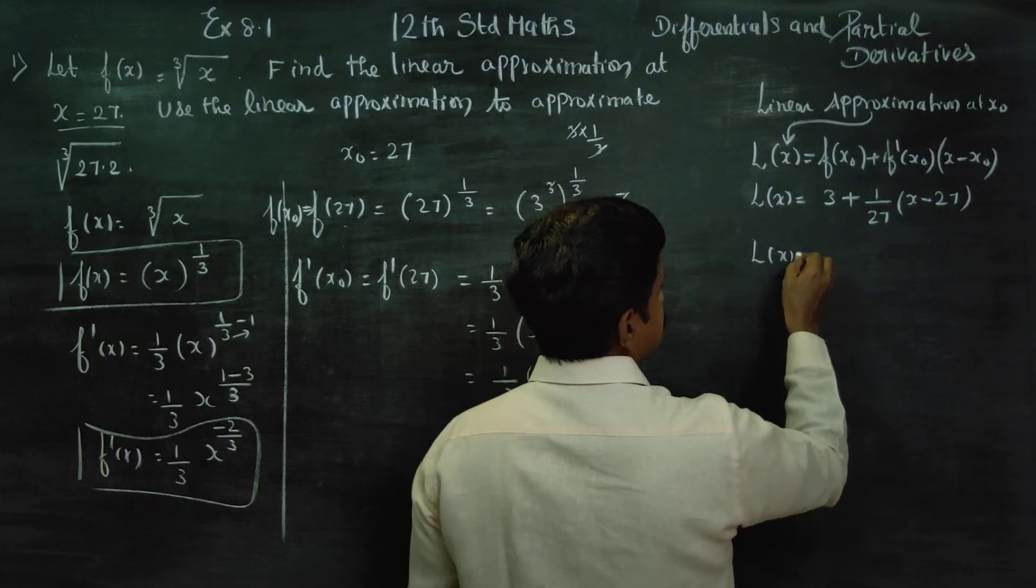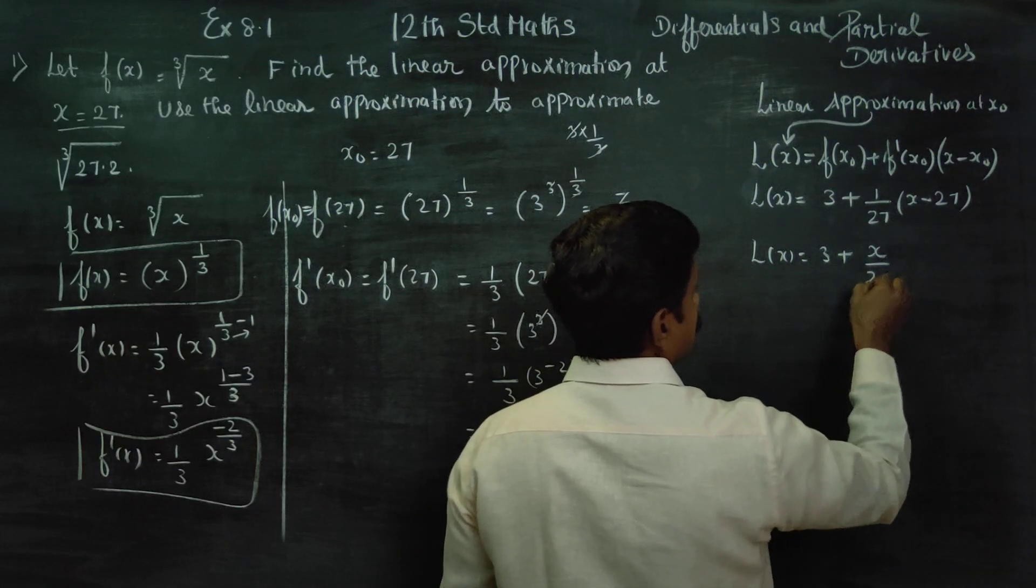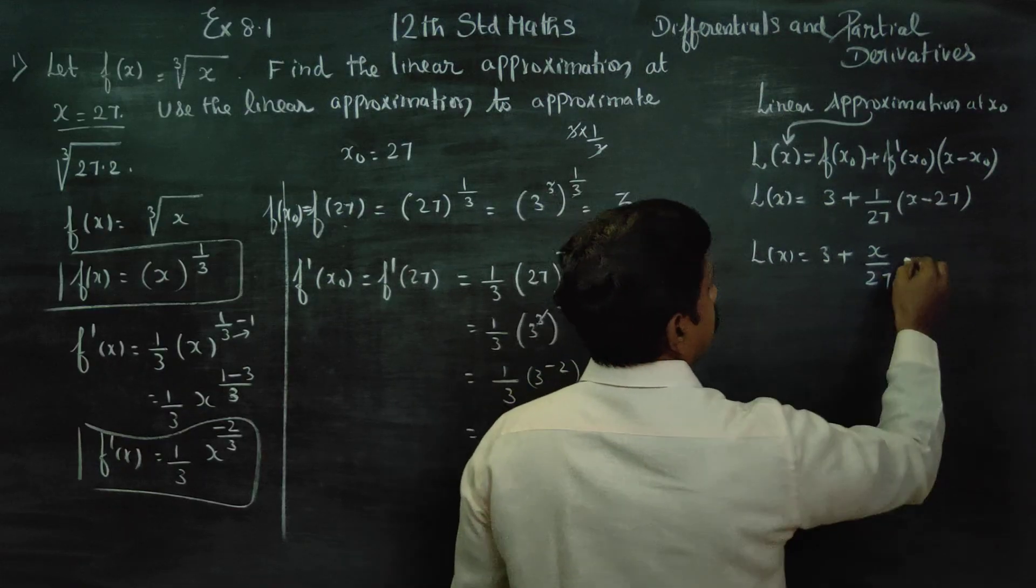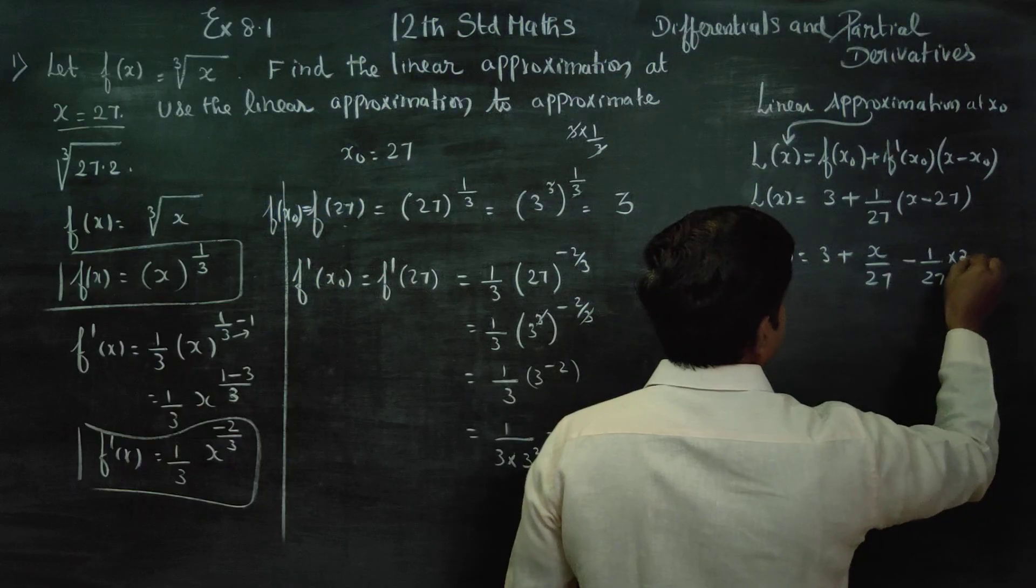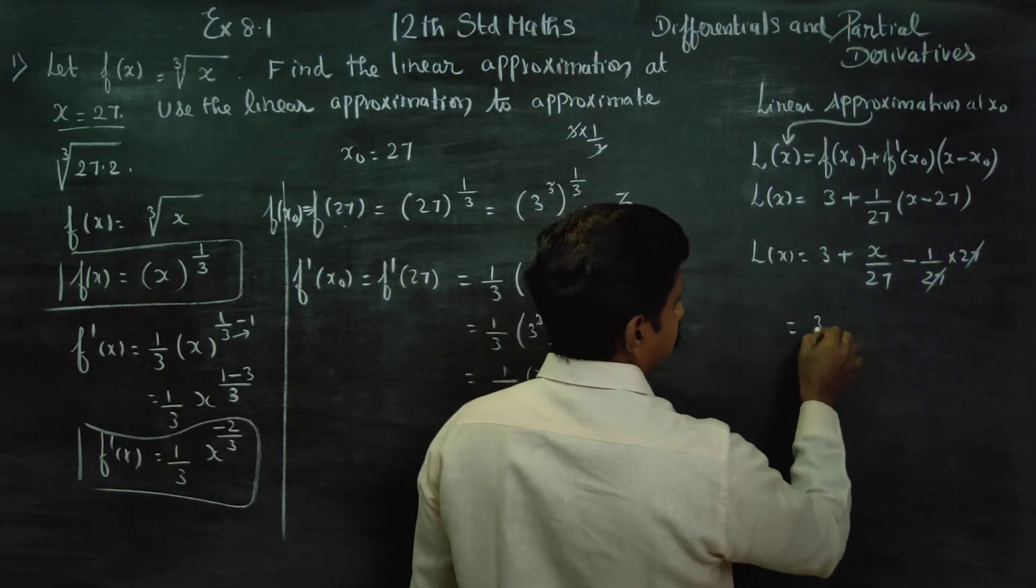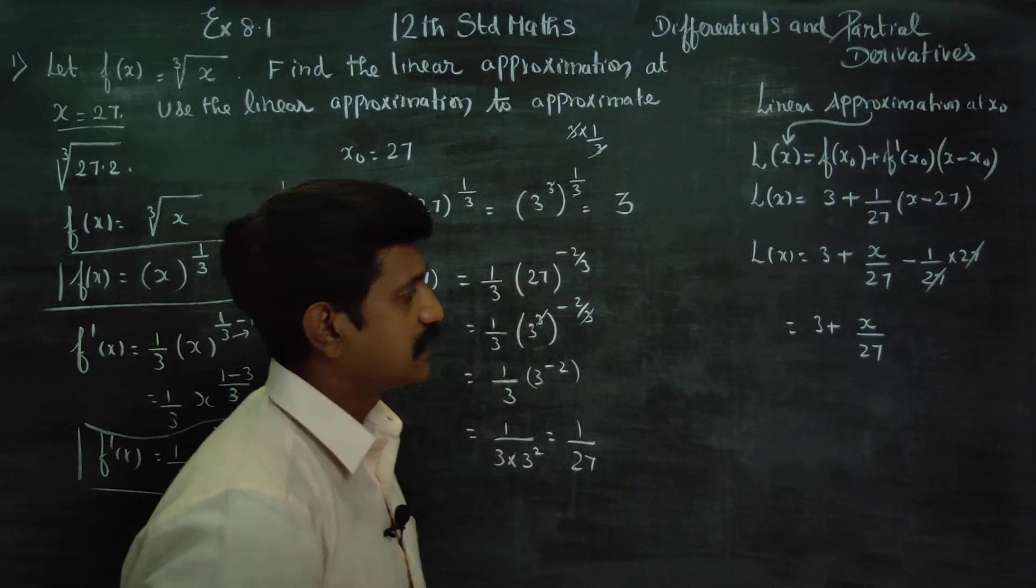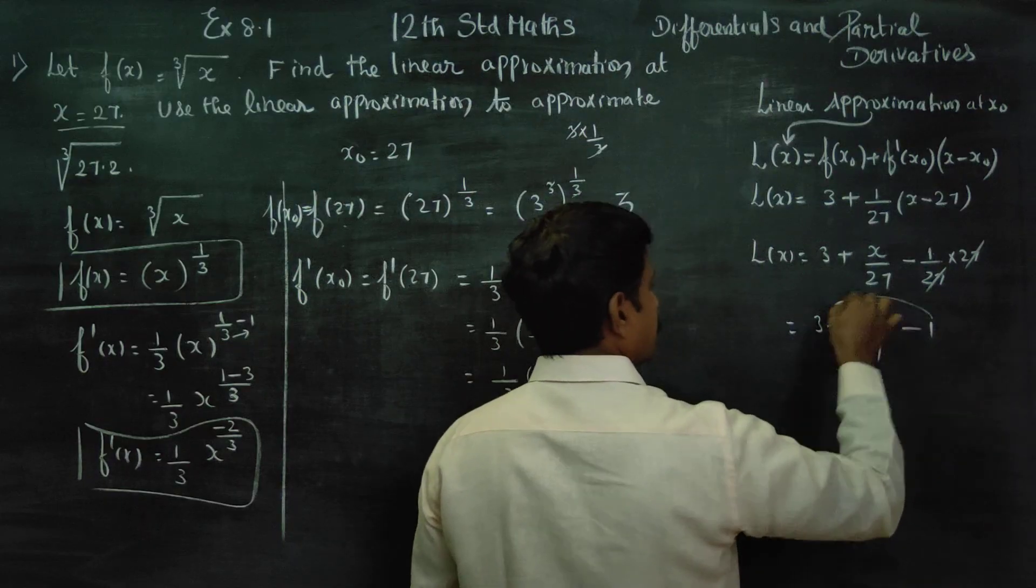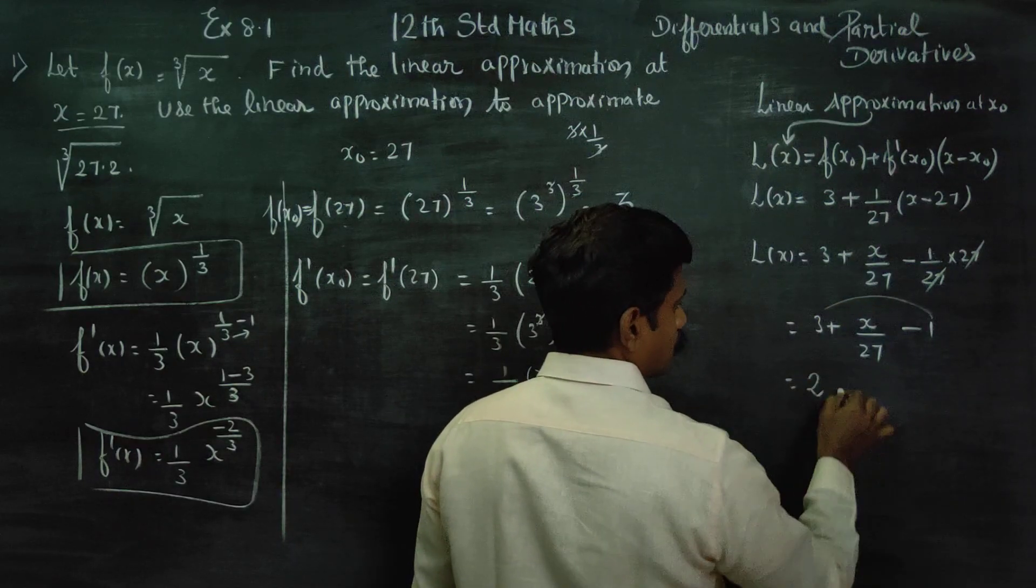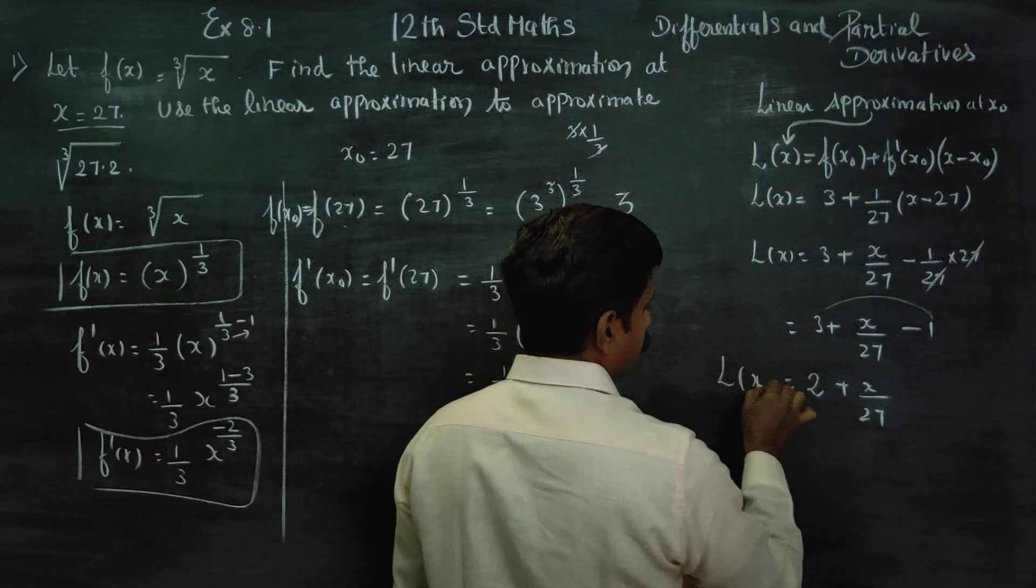So L(x) equals 3 plus 1/27 times (x - 27). This simplifies: 27 and 27 cancel, giving 3 plus x/27 minus 1, which becomes 2 plus x/27. This is my linear approximation formula at 27.